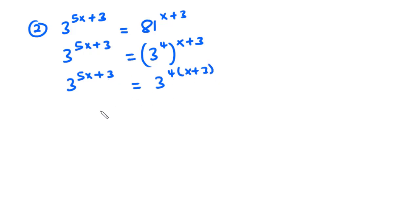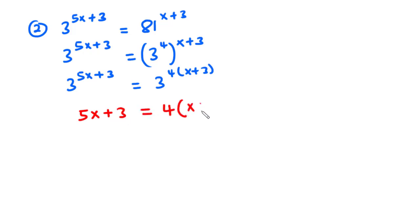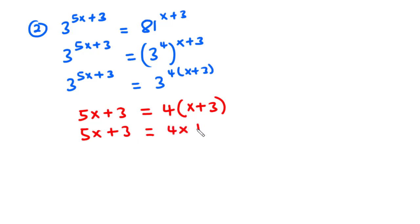let's compare their exponents. So we are going to have 5x plus 3 equals 4 into bracket x plus 3. Now 4 times 3 is 12.